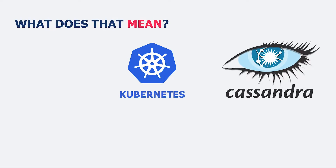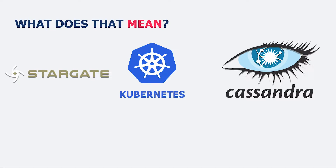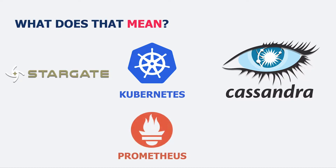On top of that we have Apache Cassandra, which is a distributed, highly available database designed to run across multiple data centers all over the world. It's been used successfully at places like Netflix and Apple to scale to petabytes of information. From there we layer in Stargate, which is a collection of APIs that use Cassandra as a backend, so you can use REST, GraphQL, or even document formats for your application.